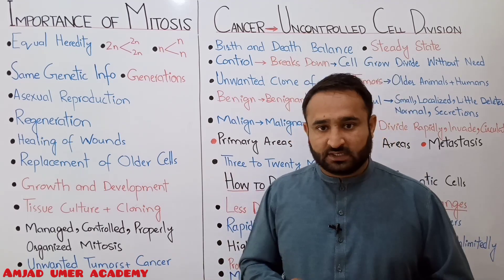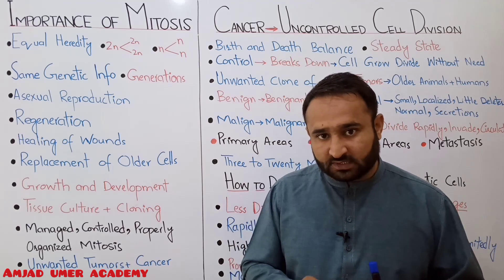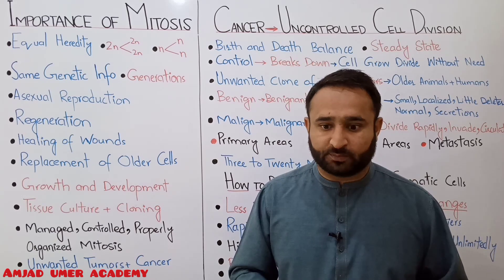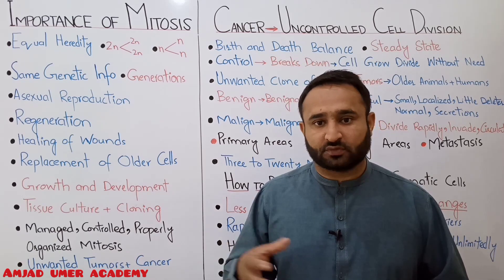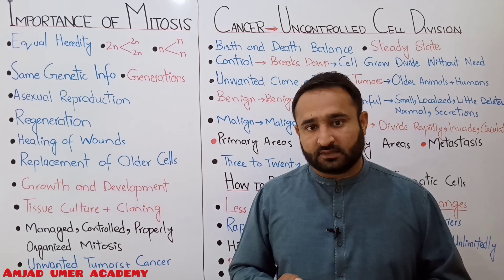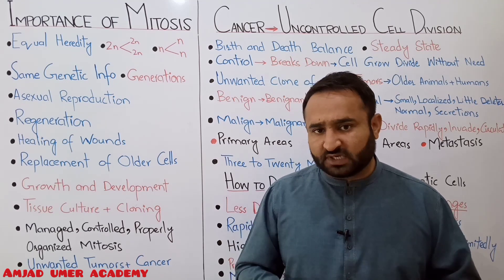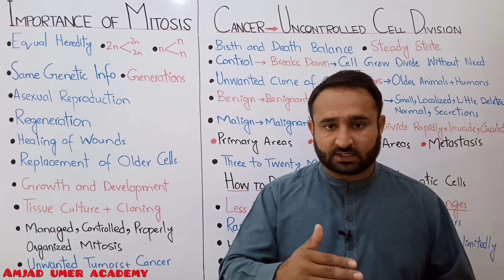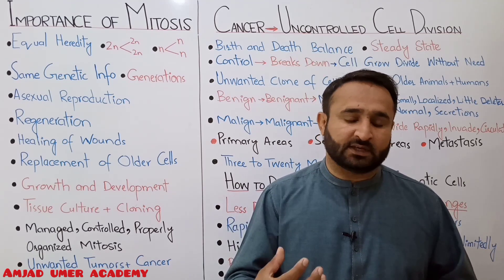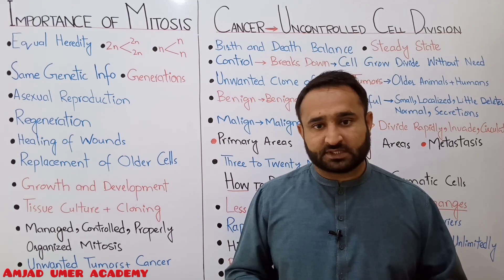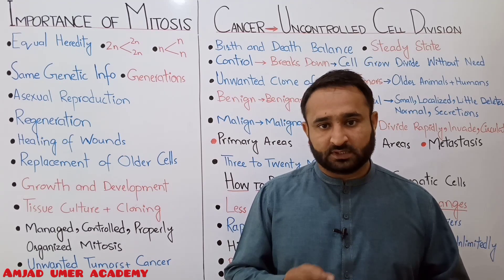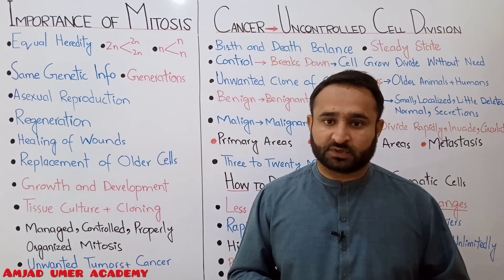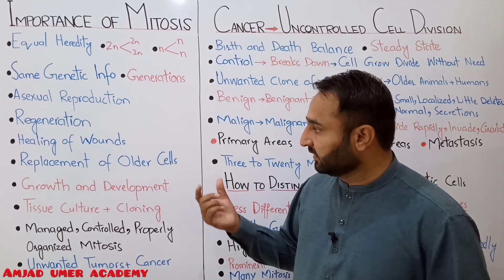Similarly, regeneration — the re-growth of broken parts — is also mitosis. We know that if a lizard's tail is cut, it grows back. Similarly, if a starfish's arms are cut, they regenerate. Planaria, if cut in the middle, the front part grows a new back, and the back part grows a new front. Even our skin regenerates after a wound. Our body's greatest regenerative ability is in liver cells.